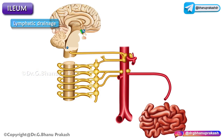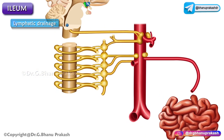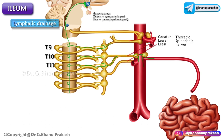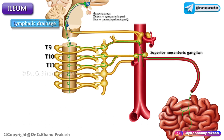Regarding nerve supply, the sympathetic nerve supply is from T9 to T11 segments, and the parasympathetic nerve supply is from the vagus nerve, mainly from the posterior vagal trunk.